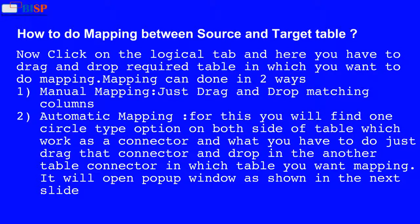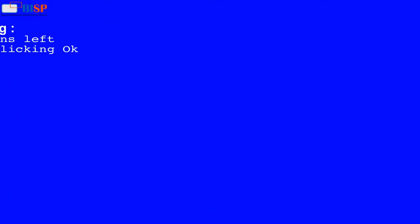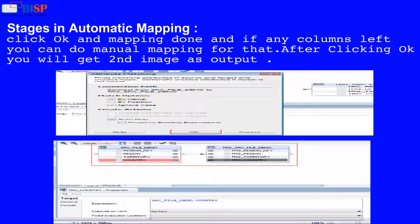Now click on the Logical tab and drag and drop the required tables in which you want to do the mapping. Mapping can be done in two ways. One: manual mapping — just drag and drop matching columns. Two: automatic mapping — for this you will find a circle-type connector option on both sides of the table. Just drag that connector and drop it onto the other table's connector for the table you want to map. It will open a popup window — click OK and the mapping is done. For any remaining columns, you can do manual mapping.